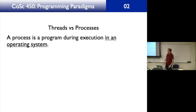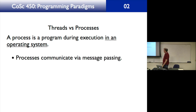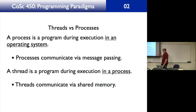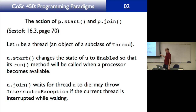A process is a program during execution in an operating system, and processes communicate via message passing. A thread is a program during execution in a process, and threads communicate via shared memory. In both C++ and Java, shared memory means the common global variable that both threads have access to — that variable is in the memory space of the process. One process does not share memory with another process, so they must communicate via message passing.